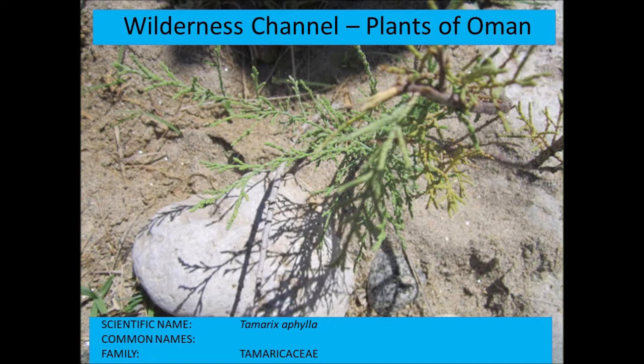Tamarix aphylla has scale-like leaves that resemble many cedars or junipers. It's typically found in areas where there is some water — usually at the upper edge of a water line, where there's a pool or pond at the maximum water level.